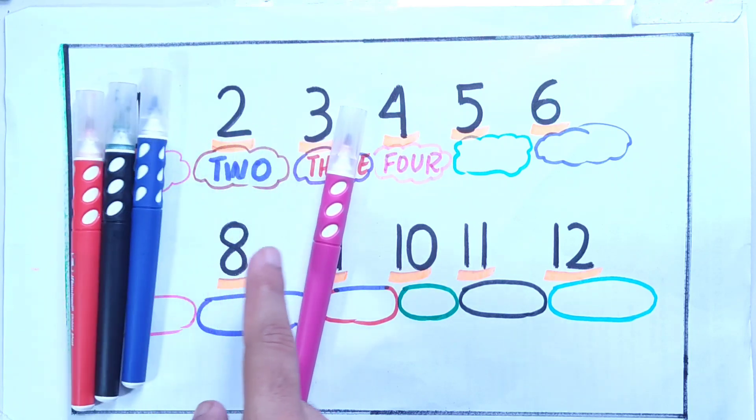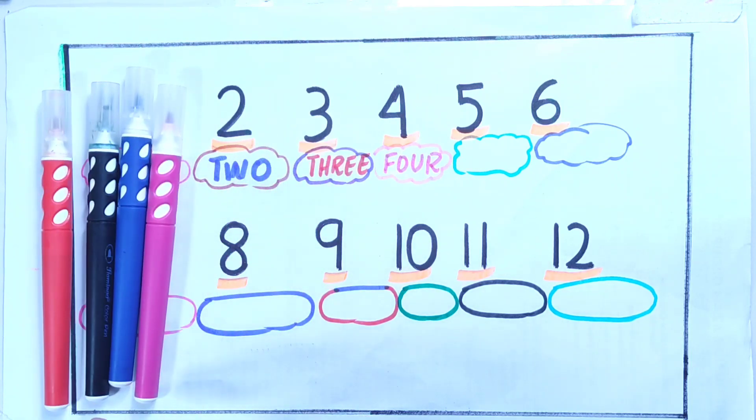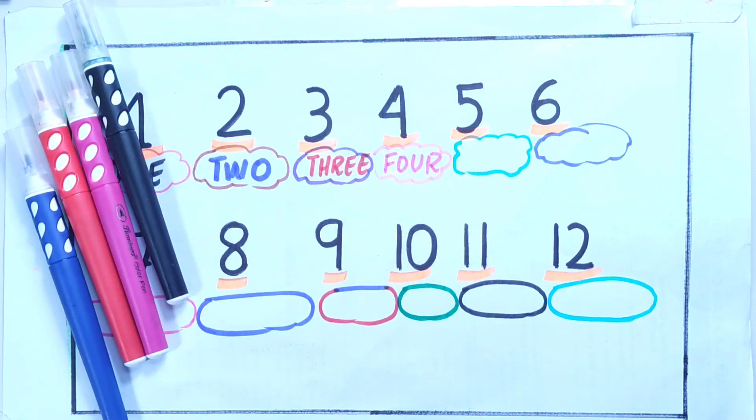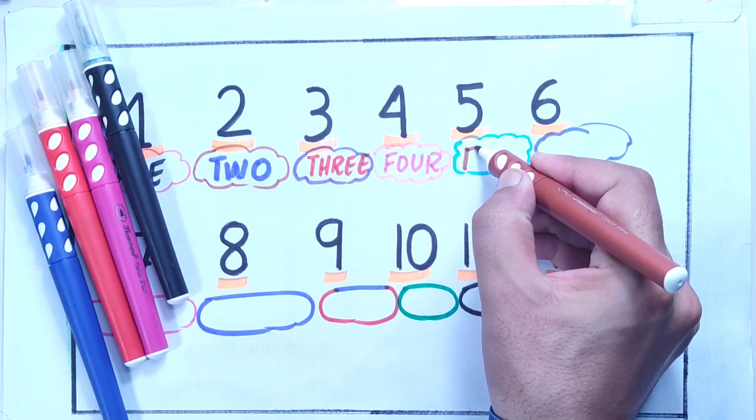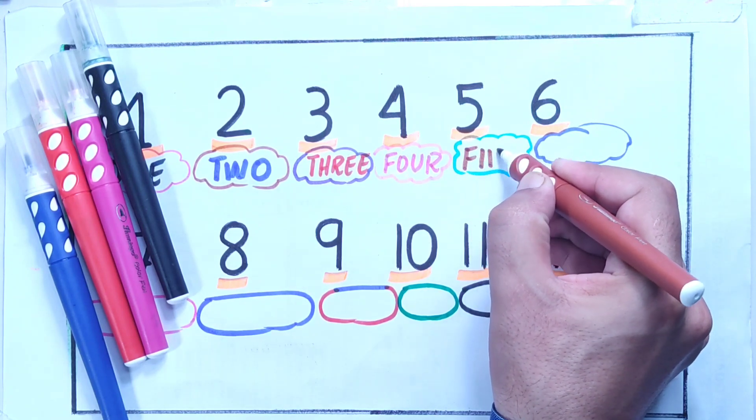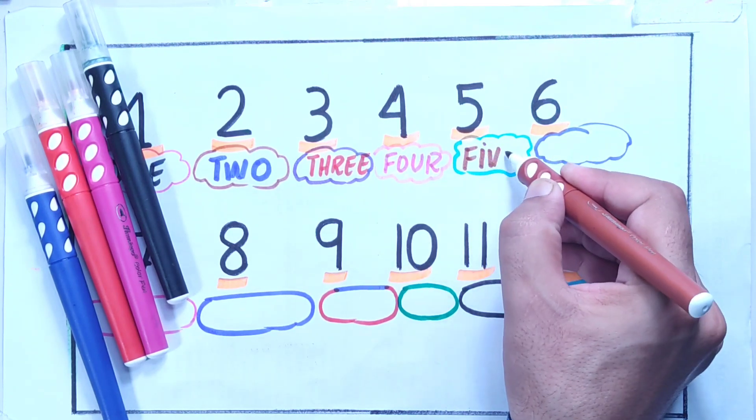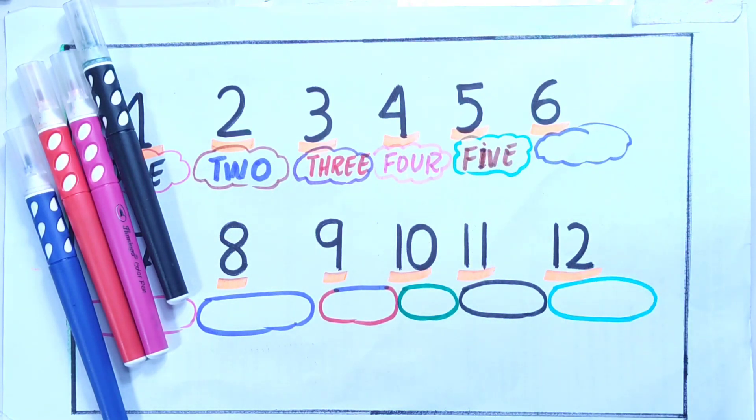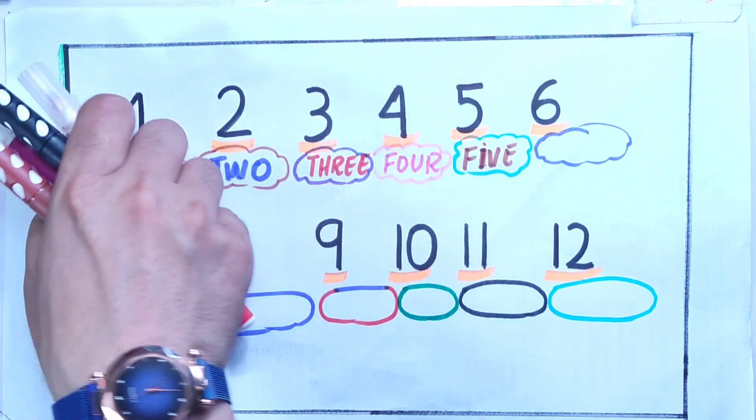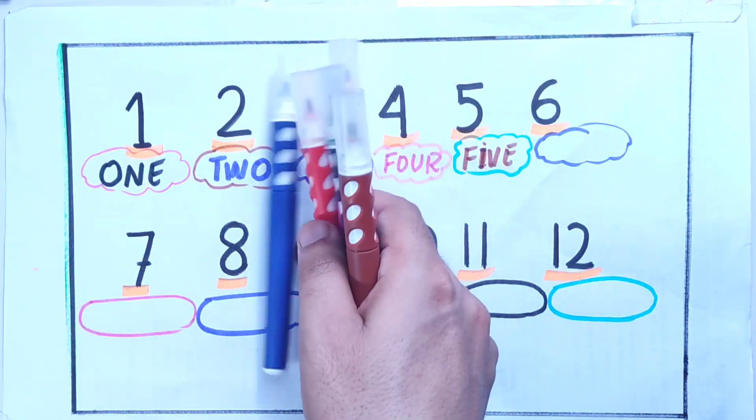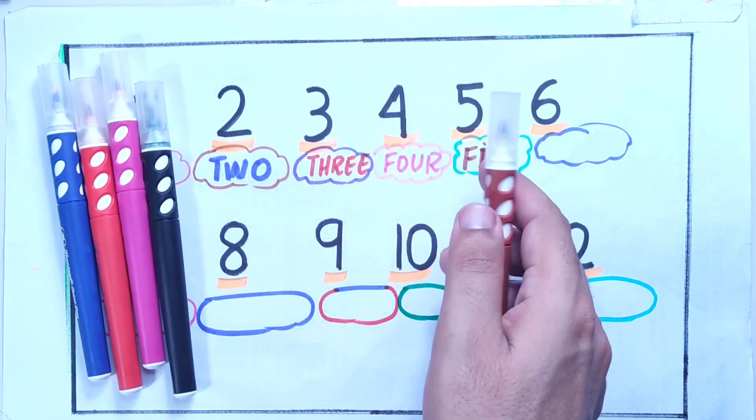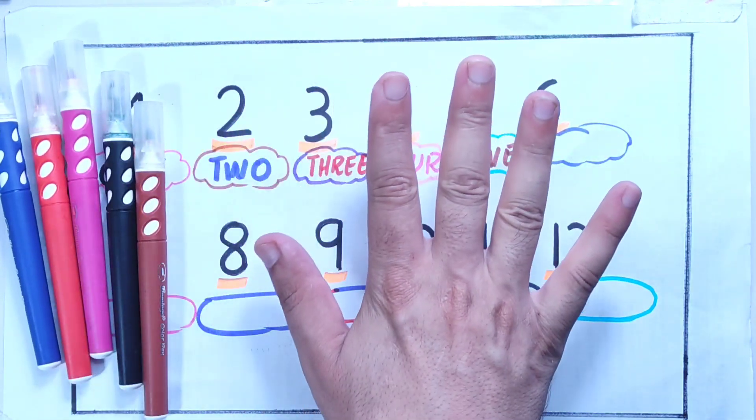And let us take this brown color. Five: F-I-V-E, five. So these are five markers, five colors, one, two, three, four, five. And we have five fingers, you can see, one, two, three, four, five. I think you are understanding.